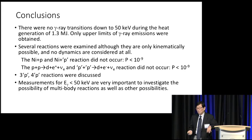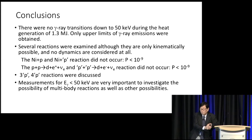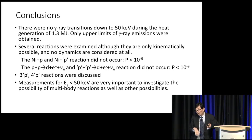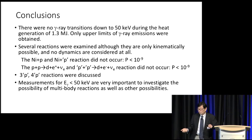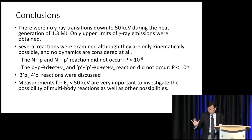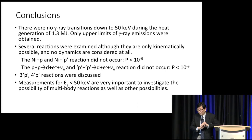Conclusions: there were no gamma ray transitions detected down to 50 keV during heat generation of 1.3 megajoules. Only upper limits of gamma ray emissions were obtained. Several reactions were examined, although they are only kinematically possible and no dynamics were considered. The nickel plus P or nickel plus dressed P reaction did not occur — the contribution is less than 10 to the minus 9. The P plus P going to D plus e+ plus neutrino reaction or the dressed 2P reaction did not occur — the contribution is less than 10 to the minus 14. Three-body and four-body dressed proton reactions were also discussed. Finally, I want to stress that measurements for E-gamma less than 50 keV are very important to assess the possibility of multiple reactions and other possibilities.